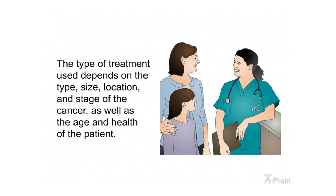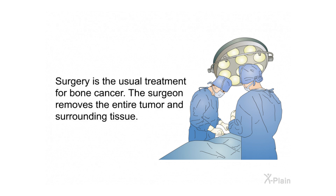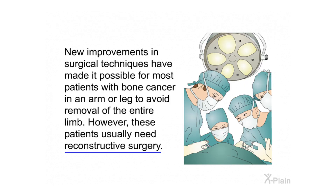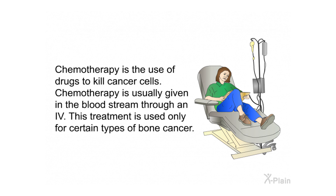The type of treatment used depends on the type, size, location, and stage of the cancer, as well as the age and health of the patient. Treatment for bone cancer may involve surgery, radiation therapy, chemotherapy, or some combination. Surgery is the usual treatment — the surgeon removes the entire tumor and surrounding tissue. New improvements in surgical techniques have made it possible for most patients with bone cancer in an arm or leg to avoid removal of the entire limb, though these patients usually need reconstructive surgery.